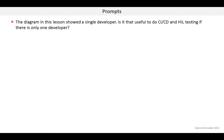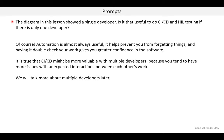The prompt for this lesson is: the diagram showed a single developer — is it that useful to do CICD and hardware in the loop testing if there's only one developer? My answer is that automation is almost always useful; it helps prevent you from forgetting things and having it double-check your work gives you greater confidence in the software. It is true that CICD might be more valuable with multiple developers because you tend to have more issues with unexpected interactions between each other's work. We'll talk more about multiple developers at the end of this course.